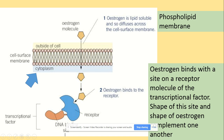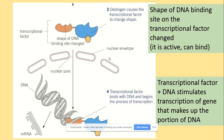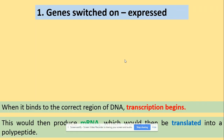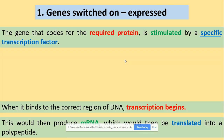Estrogen attaches to the receptor, and as we saw in the animation, the transcription factor changes shape. The activated complex — the transcription factor — can now get to the nucleus through the nuclear pores and bind to the DNA. Once it binds through the binding sites on the transcription factor, the process of transcription — the production of mRNA — can take place. Get yourself a pen and paper to summarize.